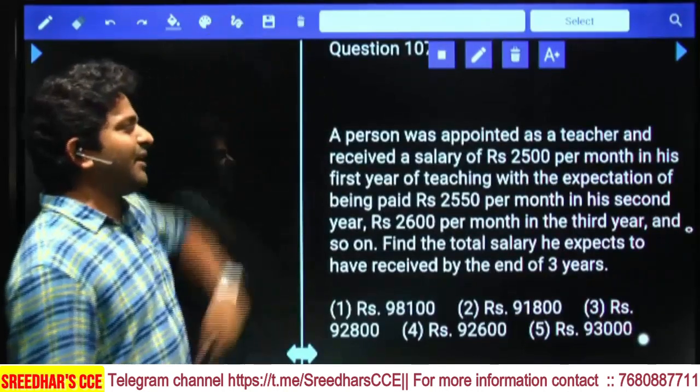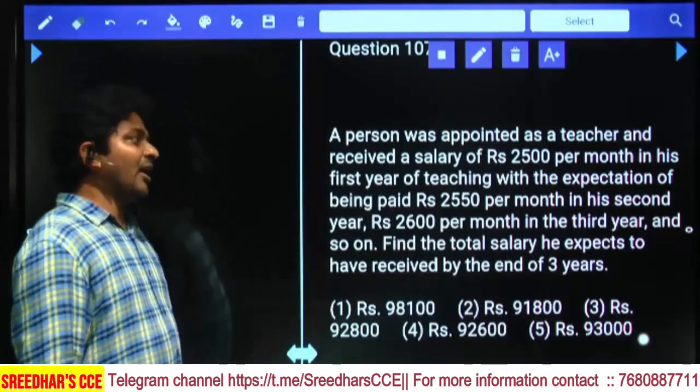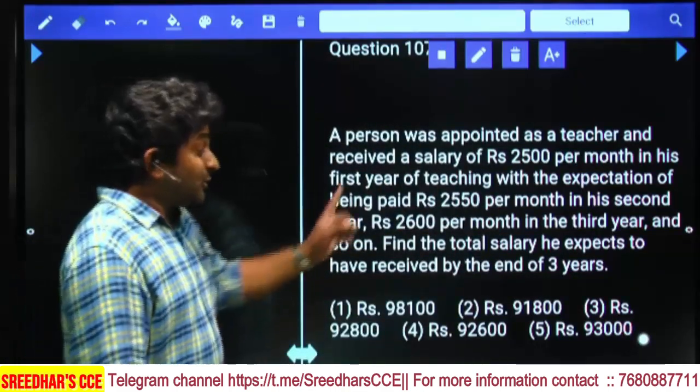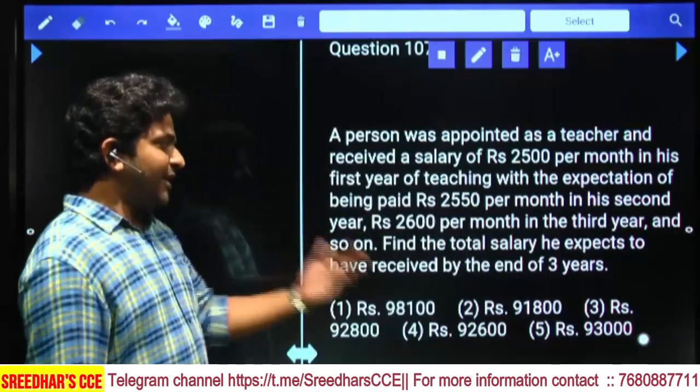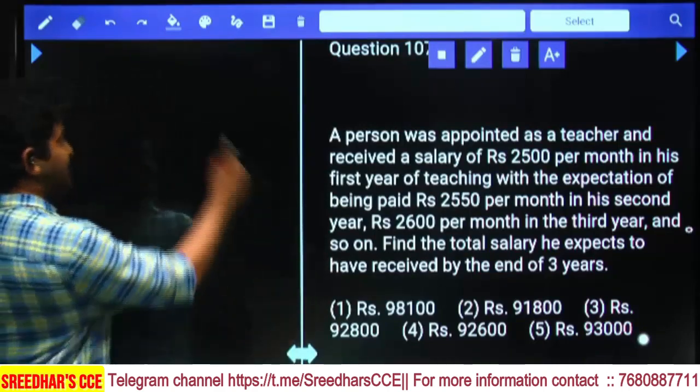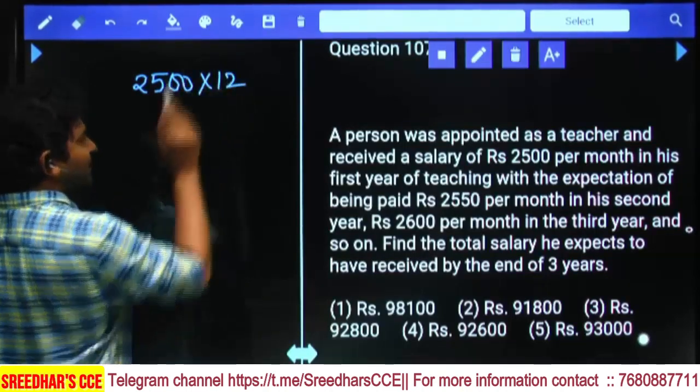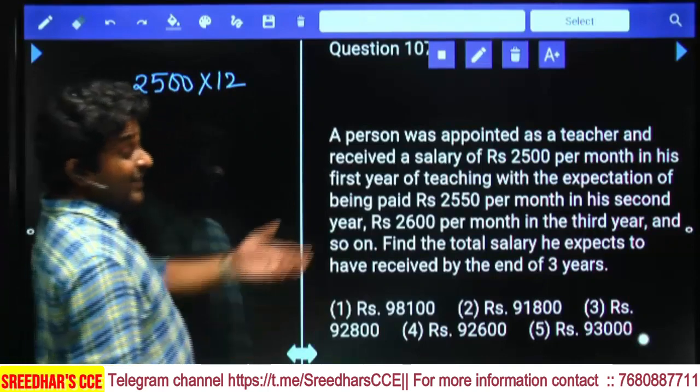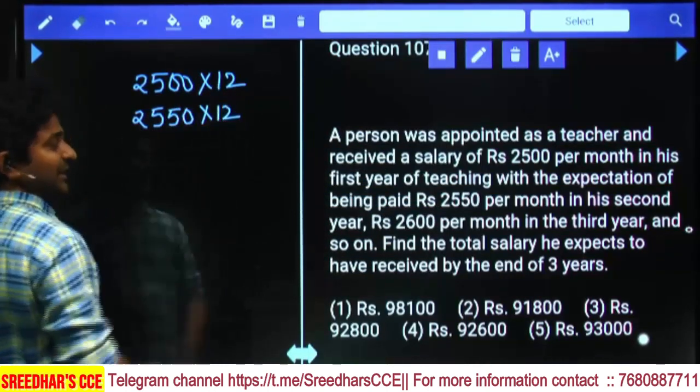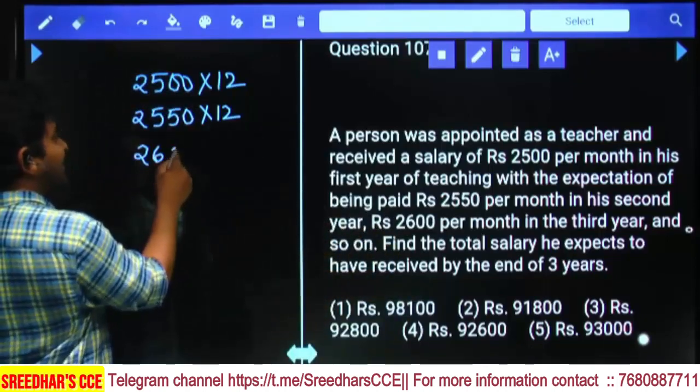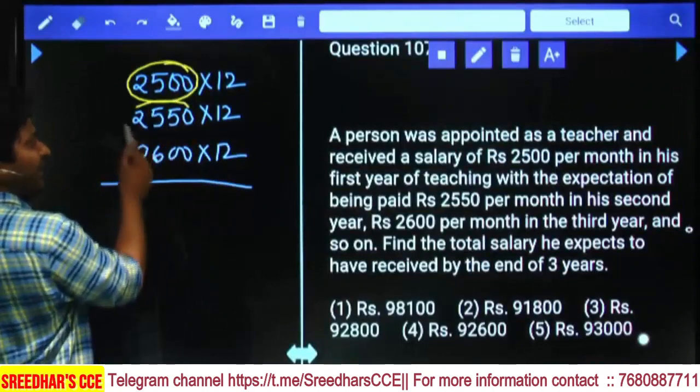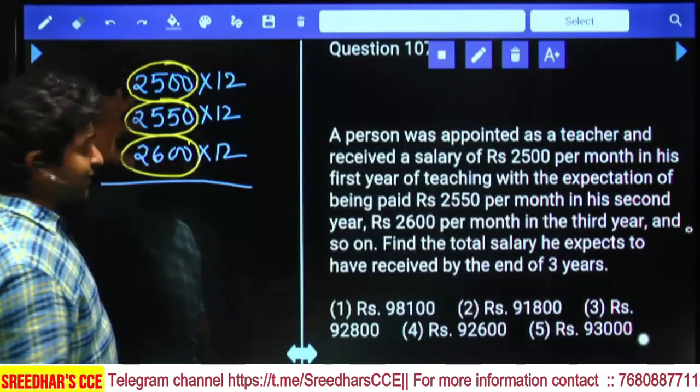A person was appointed as a teacher and received a salary of 2500 per month in his first year with expectations of 2550 per month in the second year and 2600 per month in the third year. Find the total salary he expects to have received by the end of three years. First year: 2500 times 12. Second year: 2550 times 12. Third year: 2600 times 12.